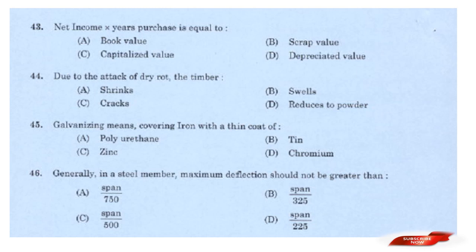Question: Net income into years purchase is equal to? Options: Book value; Scrap value; Capitalized value; Depreciated value. Answer: Option C — Capitalized value. Capitalized value is equal to net income multiplied by years purchase.